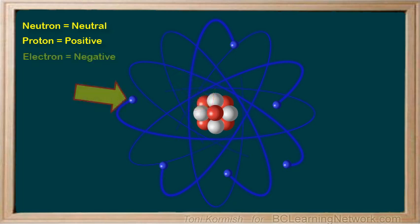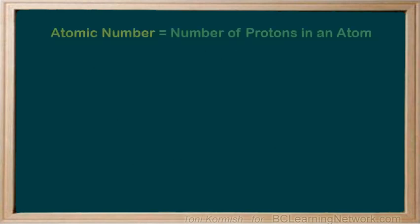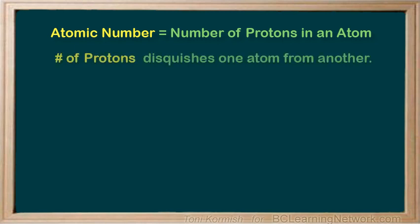And the third subatomic particle, called the electron, has a negative charge and is found orbiting around the nucleus of the atom. The atomic number of an atom indicates the number of protons, or positive charges, in the nucleus of an atom. And it is the number of protons in the nucleus of an atom that distinguishes one type of atom from another.